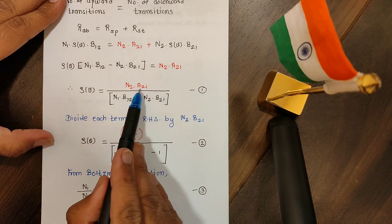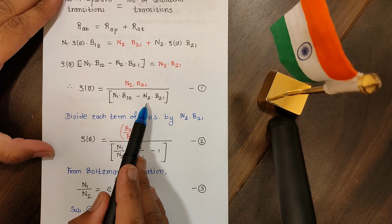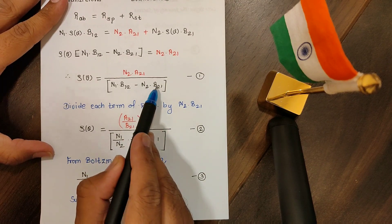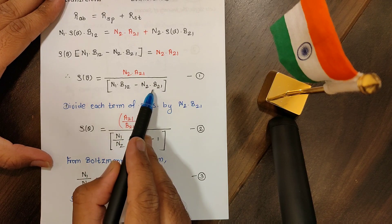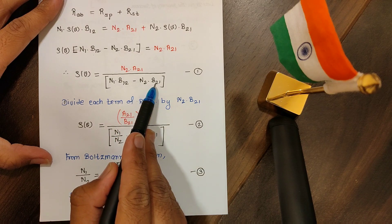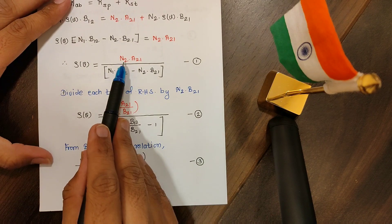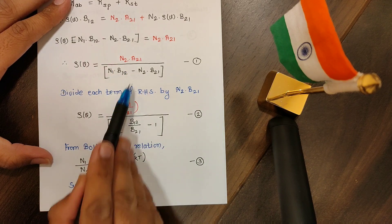So we are left with n1 into b12 minus n2 into b21 equals n2 multiplied by a21. Hence I can design the equation of rho as n2 into a21 divided by this whole bracket. Now I want one over here. Why? That you will come to know later. But in order to get one here, what I'll do is I'll divide each term of RHS by n2 into b21.